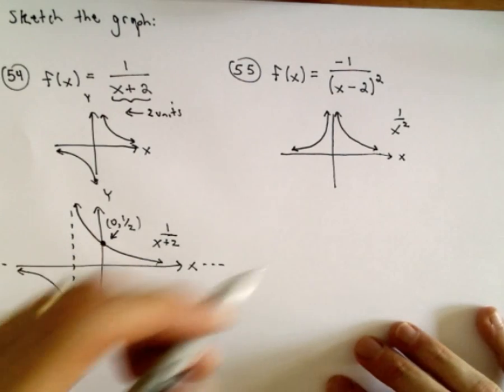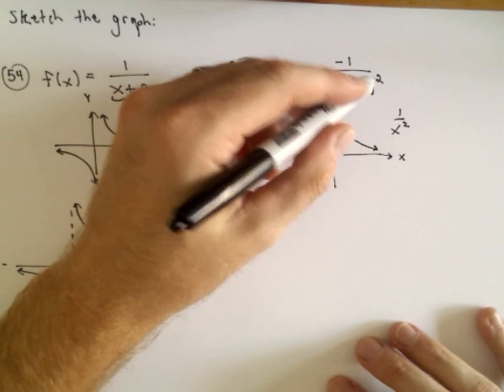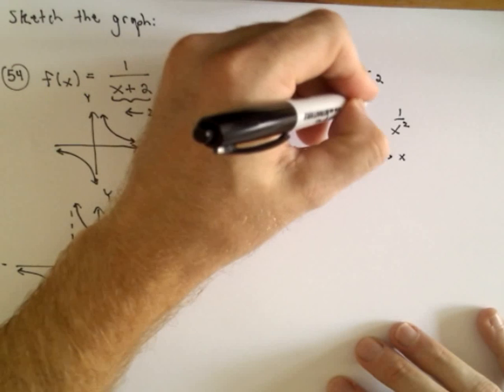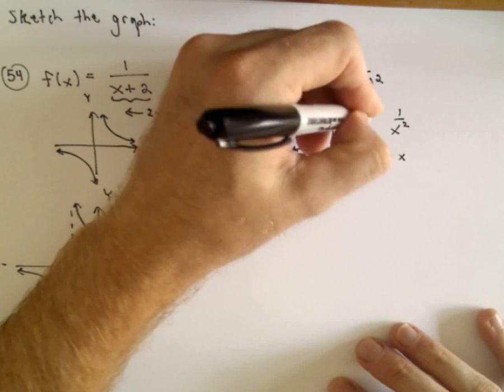Well, a couple things here. If we graph 1 over x minus 2 quantity squared, the minus 2 is going to shift the graph to the right 2 units.